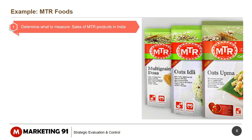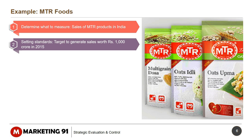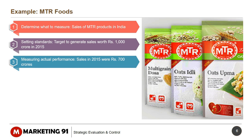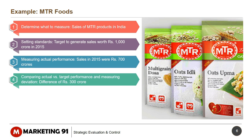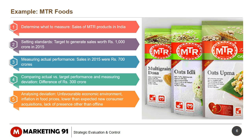Example — MTR Foods. Determining what to measure: sales of MTR products in India. Setting standards: target to generate sales worth rupees 1,000 crore in 2015. Measuring actual performance: sales in 2015 were at rupees 700 crore. Comparing actual versus target performance and measuring deviation: difference of rupees 300 crore. Analyzing deviation: unfavorable economic environment, inflation in food prices, lower than expected new consumer acquisitions, and lack of presence other than offline.